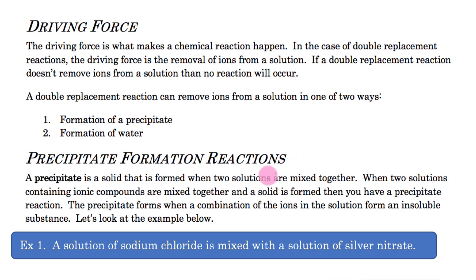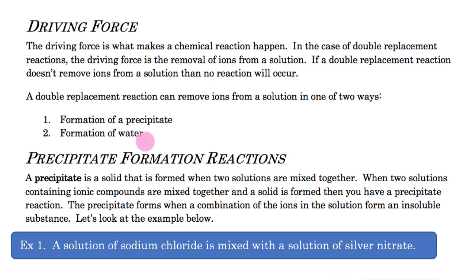When talking about double replacement reactions, we want to talk about the driving force — what makes the reaction happen, the thrust that makes reactants form into products. For double replacement reactions, we're talking about removing those ions from solution. We do it in one of two ways: we either form a precipitate or we form water. A precipitate is just a solid formed when two solutions are mixed together — whenever I say precipitate, I mean a solid.